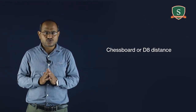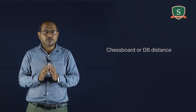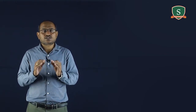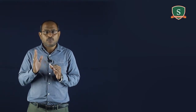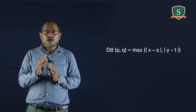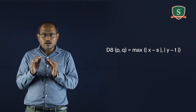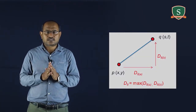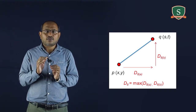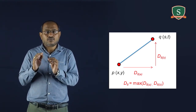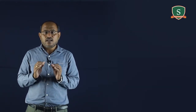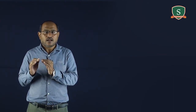Next is chessboard or D8 distance. The chessboard distance metric measures the path between pixels based on the eight-connected neighborhood. Pixels whose edges or corners touch are one unit apart. The D8 distance, also called chessboard distance, between p and q is defined as: d8 of p, q equals the maximum of the magnitude of (x minus s) and the magnitude of (y minus t).